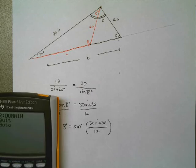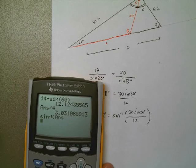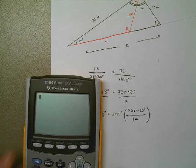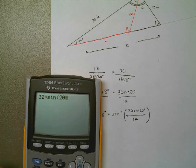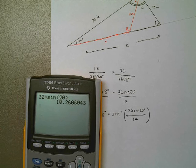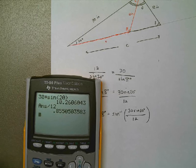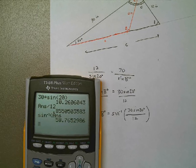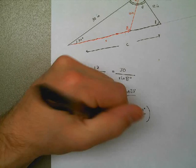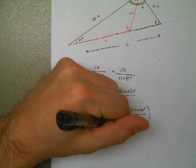So on my calculator here, I'm going to go to, there's my error message from last time. Here we go. So 30 times the sine of 20 gives me this. I'm going to divide that by 12. And then I'm going to do the arc sine of the answer. That angle is 58.77 degrees. 58.77 degrees.